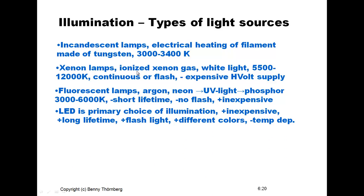The preferred light for machine vision systems is light emitting diodes — LEDs are the primary choice of illumination. They are inexpensive, have a very long lifetime, can easily be driven as a flashlight, and come in different colors. The latest development was the blue LED, and by combining yellow, blue, green, and red diodes you can compose light with different spectral compositions, including white LEDs. These diodes have a temperature dependency, so thermal design is very important, especially for high-power LEDs which need to be properly cooled.